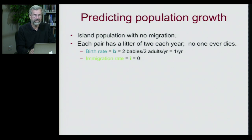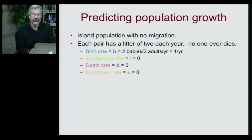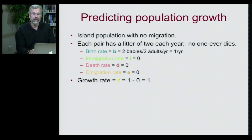There's no immigration because we're on an island. Nobody dies, so D is also equal to zero. And no one can ever leave, so the emigration rate is also zero. If we sum all these up, R is equal simply to one, because the population is only being changed by the birth rate.